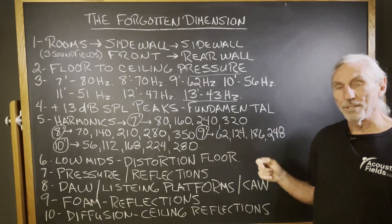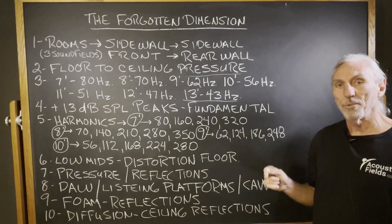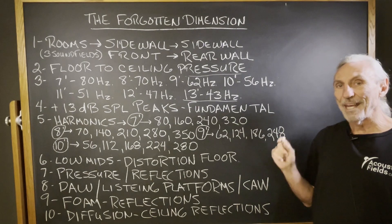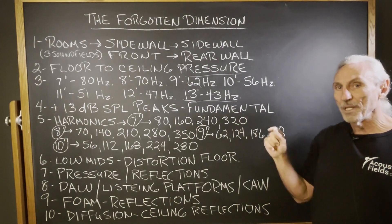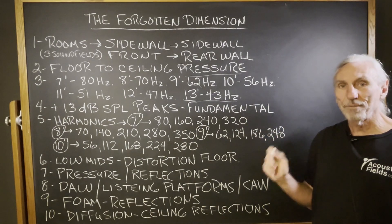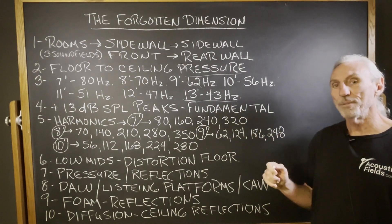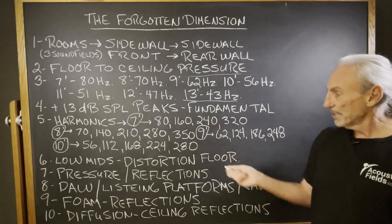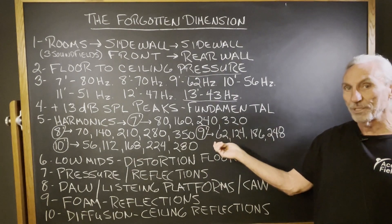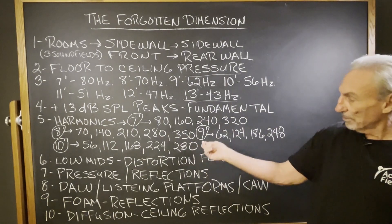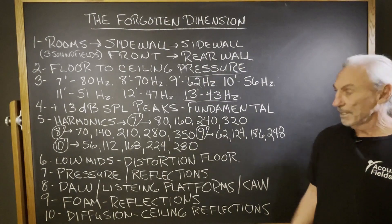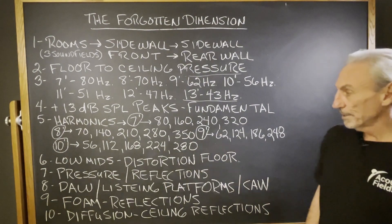In voice — I'm constantly talking to people that work with voice all the time. That 80, 90, 100 to 300, 400 cycle range is very, very critical when it comes to managing voice. So the last thing we want is the dimensions of our floor to ceiling producing those kind of frequency problems when we're working with voice.